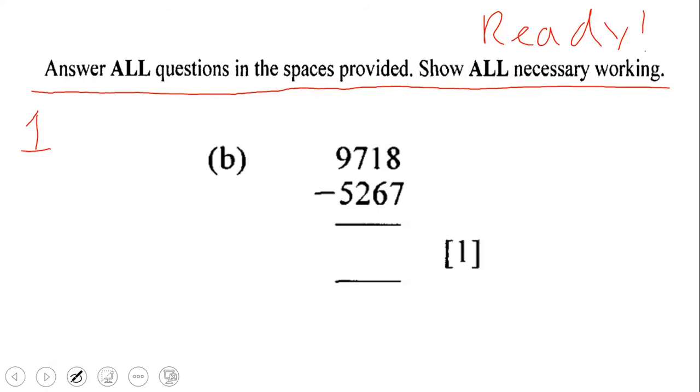Now this question, question 1b, is actually a subtraction problem. This question wants us to subtract these two numbers: 9,718 and 5,267.